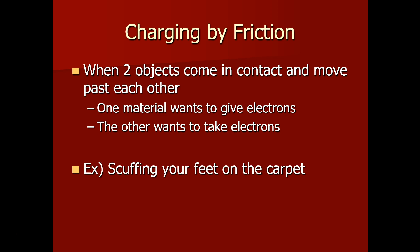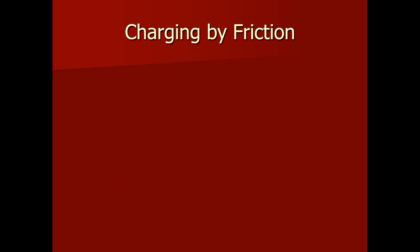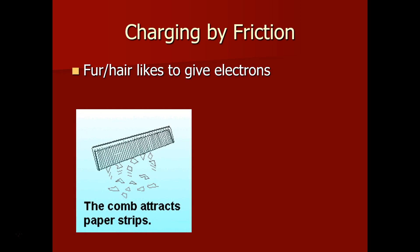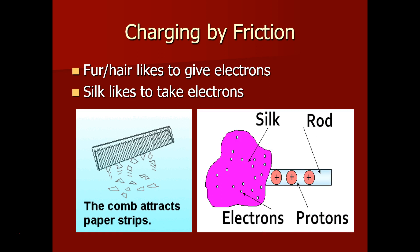Common examples here are scuffing your feet on the carpet and then walking up behind someone to shock them. This is when you slide out of your car seat and you feel a shock. Common materials like fur and hair give electrons off. This is why the comb attracts paper strips. And silt likes to take electrons. So fur and hair will make things negatively charged. Silt can make things positively charged by taking away those electrons.